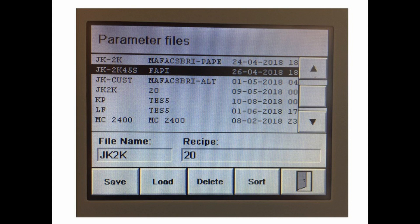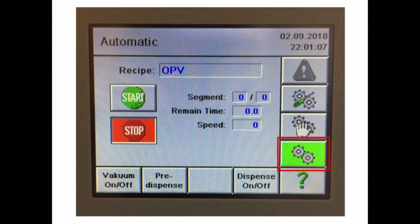After defining and saving the recipe we press the door icon until we return to the main screen and then switch to automatic mode to run the recipe. From here the spin coater can be controlled from inside the glovebox.